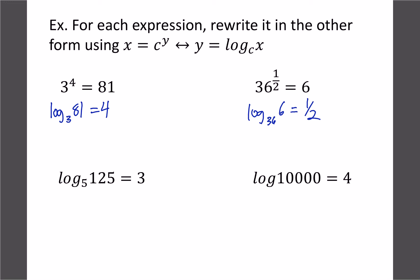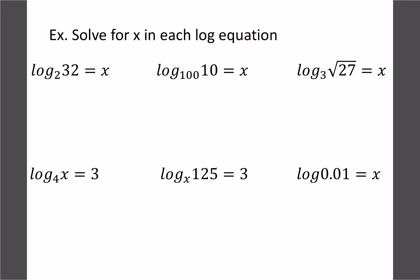Let's switch these ones the other way around. That'll be 5 to the 3 equals 125. Remember your base number is the same and then crisscross your 3 and the 125. In this case, this one is base 10 so you'd have 10 to the power 4 equals 10,000.